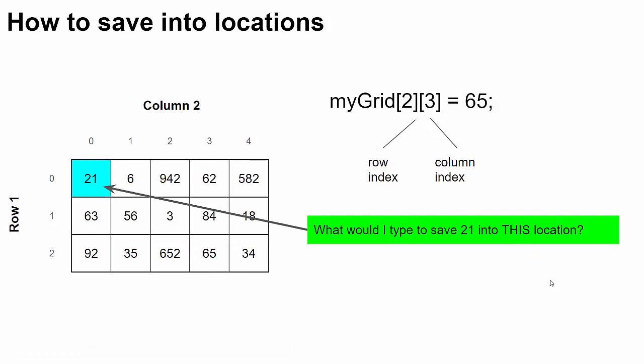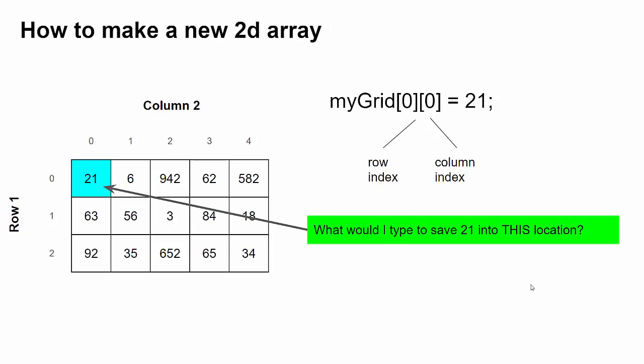One more. What about 21 into that location? And there you go. That location is row zero, column zero. So myGrid[0][0] equals 21.